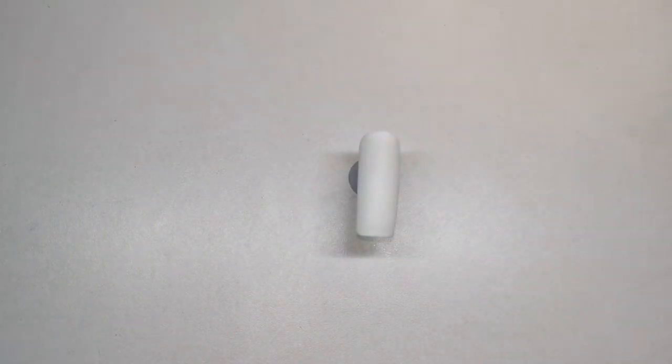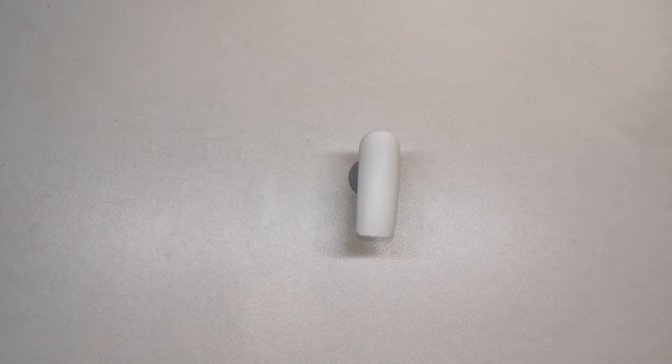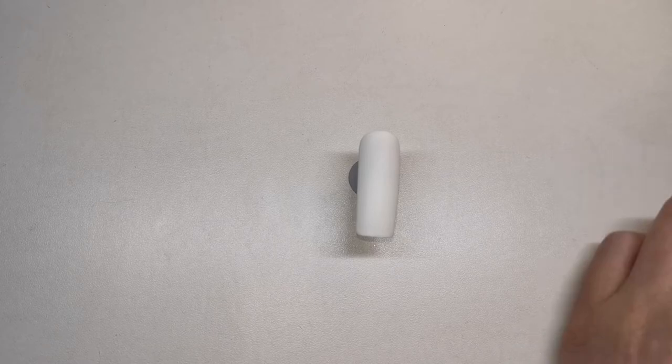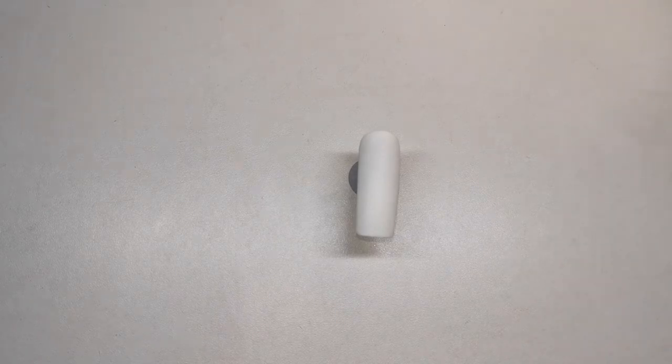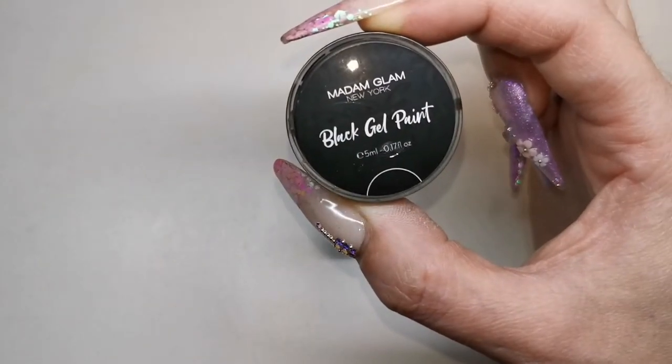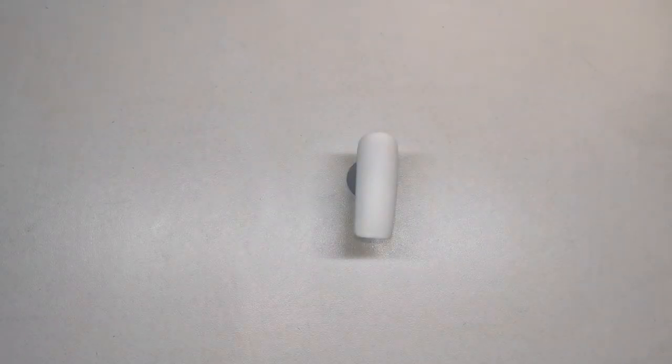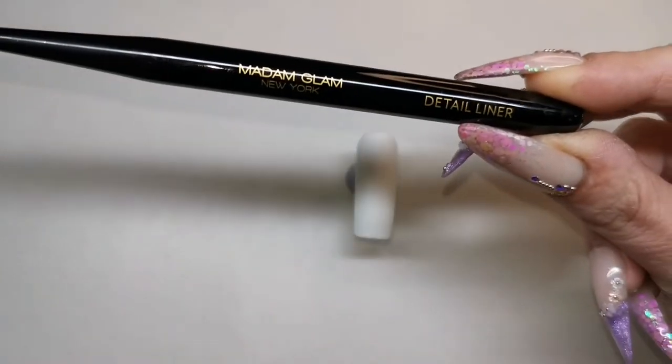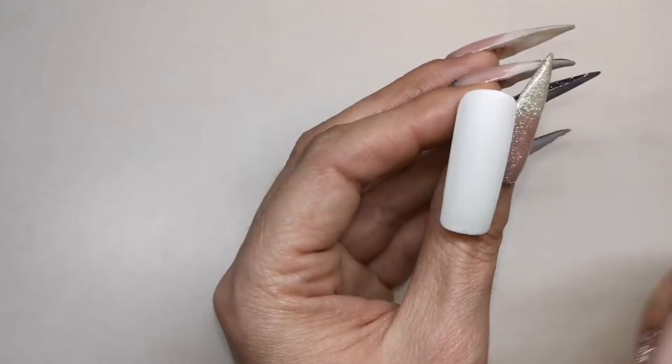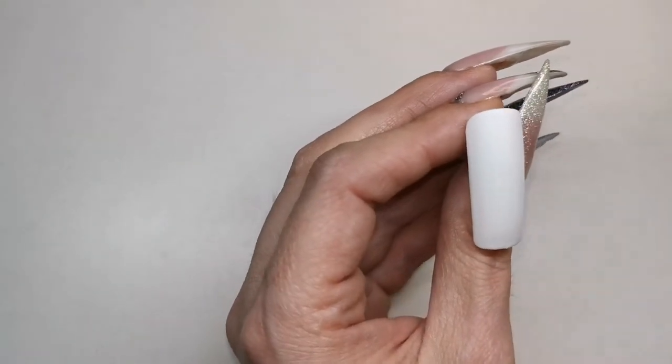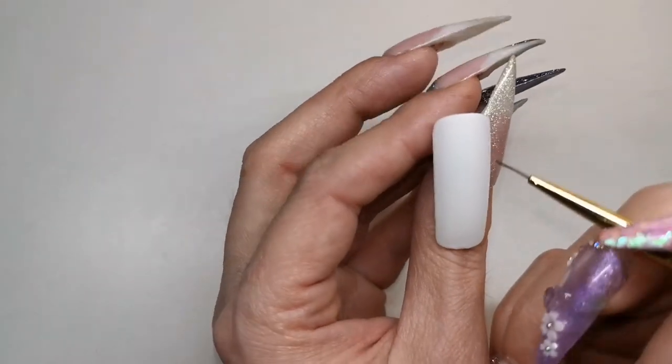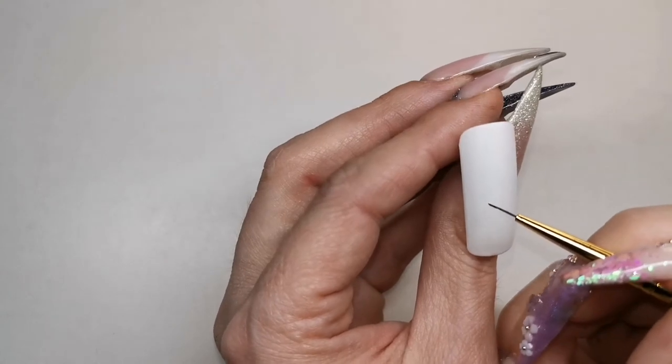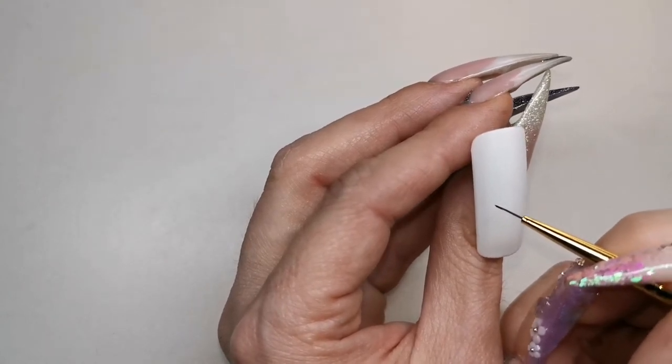On this nail I want to paint an English Bulldog, or I'm going to try to attempt to paint an English Bulldog. I'm going to be using the Madame Glam's black gel paint to do this. I cannot beat this gel paint guys, amazing product for nail art. I'm going to be using the Madame Glam detail liner brush. I'm just going to start off by sketching out first where I want things to be, so don't worry if it looks a bit rough at this stage.